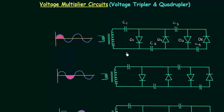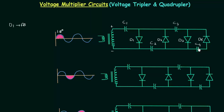I will first analyze this circuit in the positive half cycle. In the first positive half cycle, the polarity of input voltage will be plus-minus and diode D1 will be forward biased. Initially, none of the capacitors C1, C2, C3, and C4 are charged.